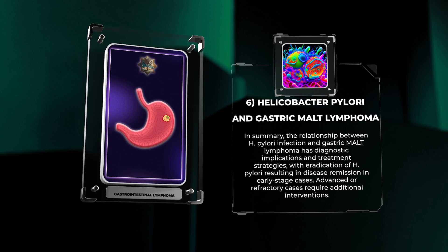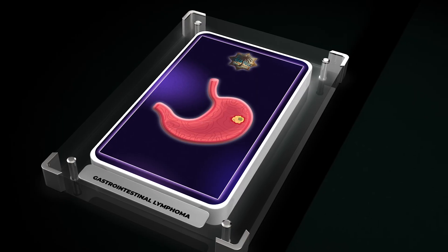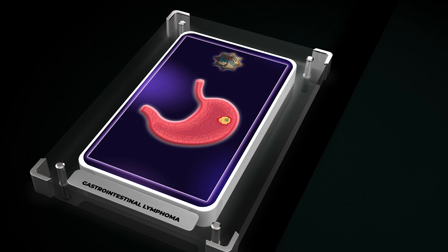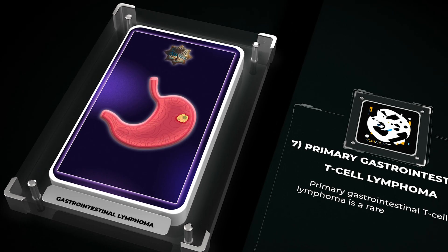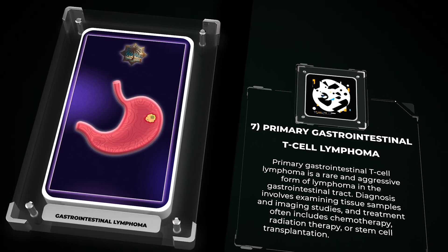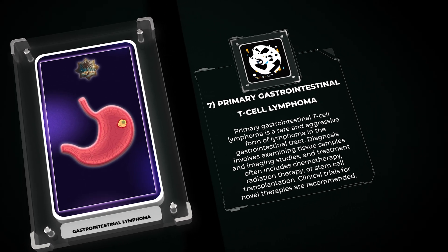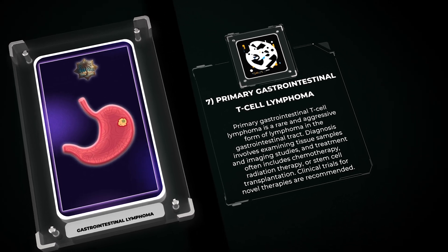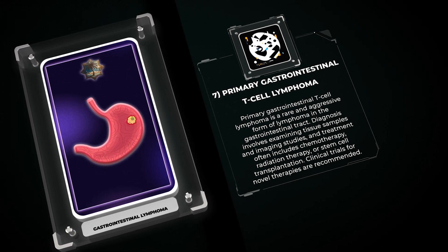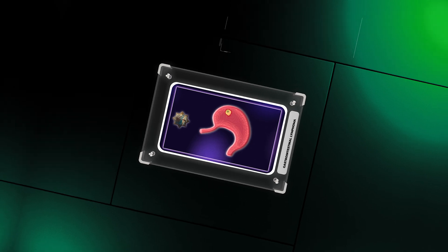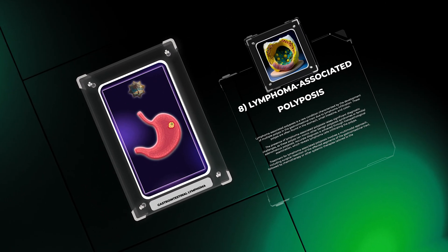Primary gastrointestinal T-cell lymphoma is a rare and aggressive form of lymphoma in the gastrointestinal tract. Diagnosis involves examining tissue samples and imaging studies, and treatment often includes chemotherapy, radiation therapy, or stem cell transplantation. Clinical trials for novel therapies are recommended.